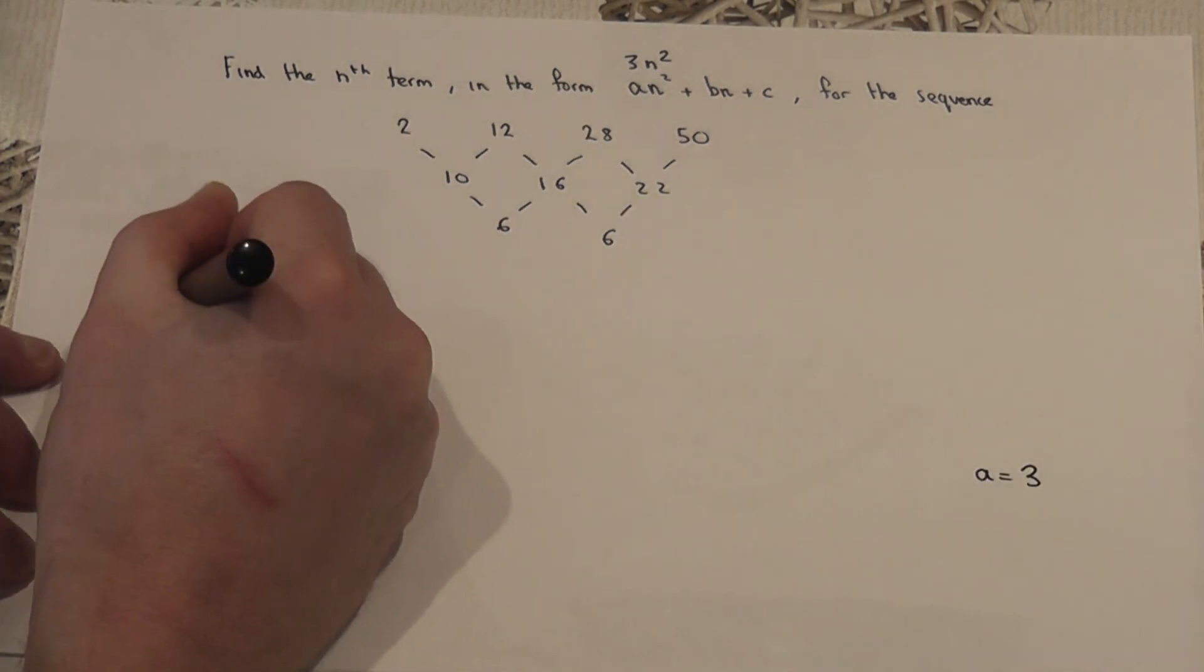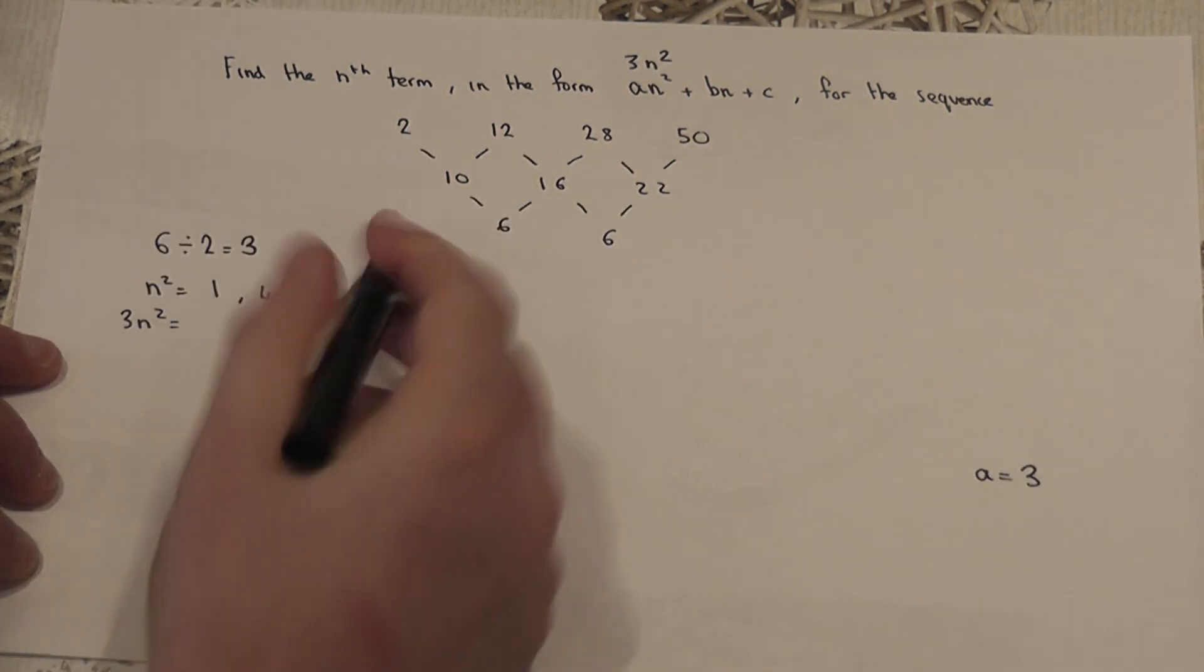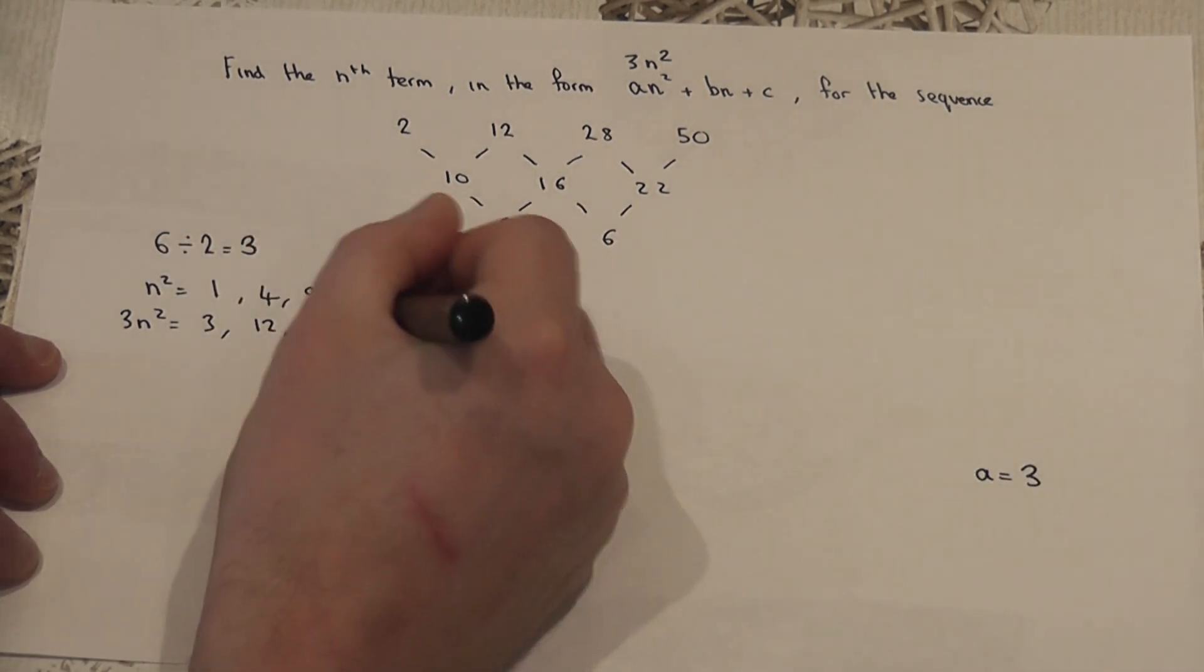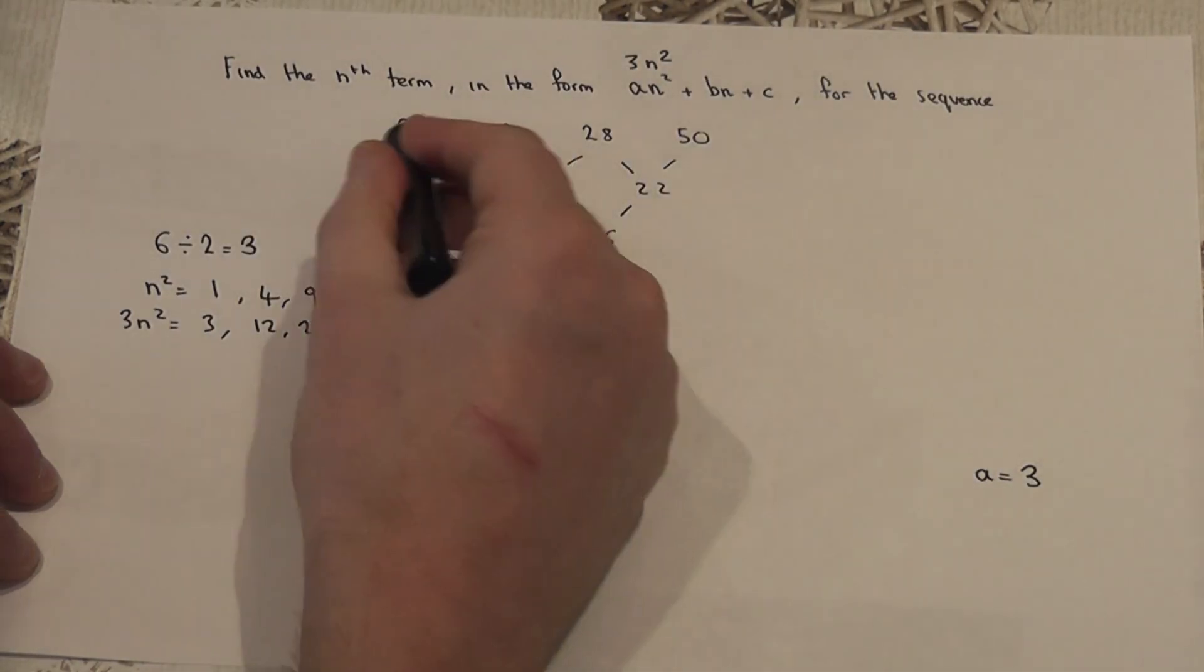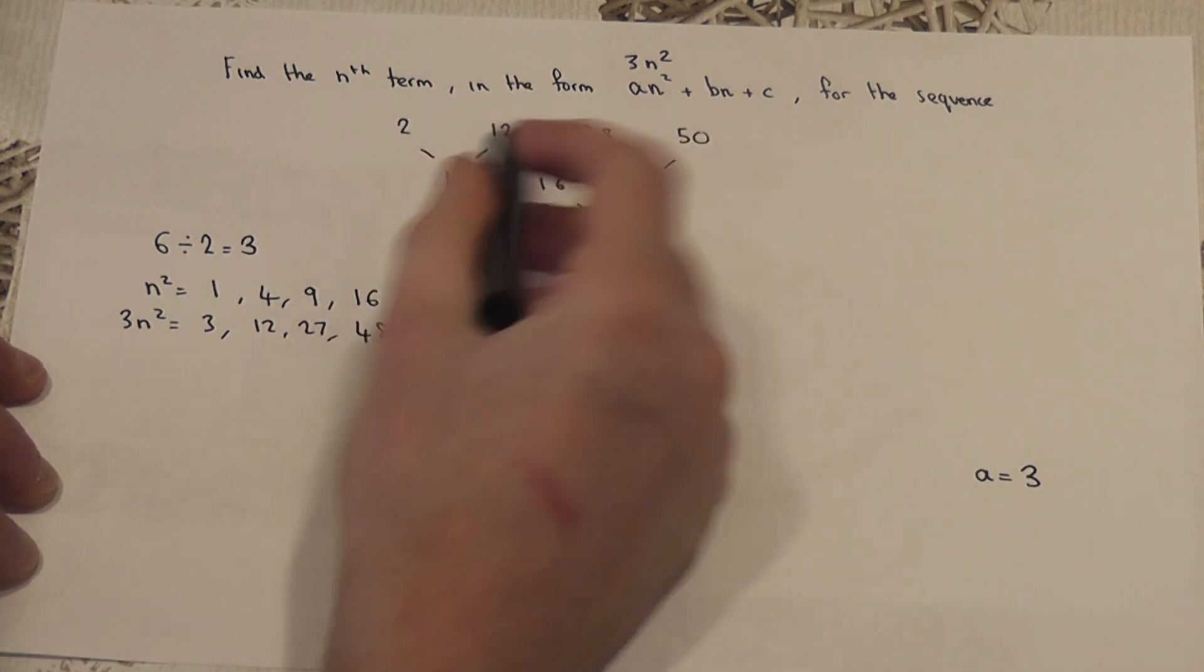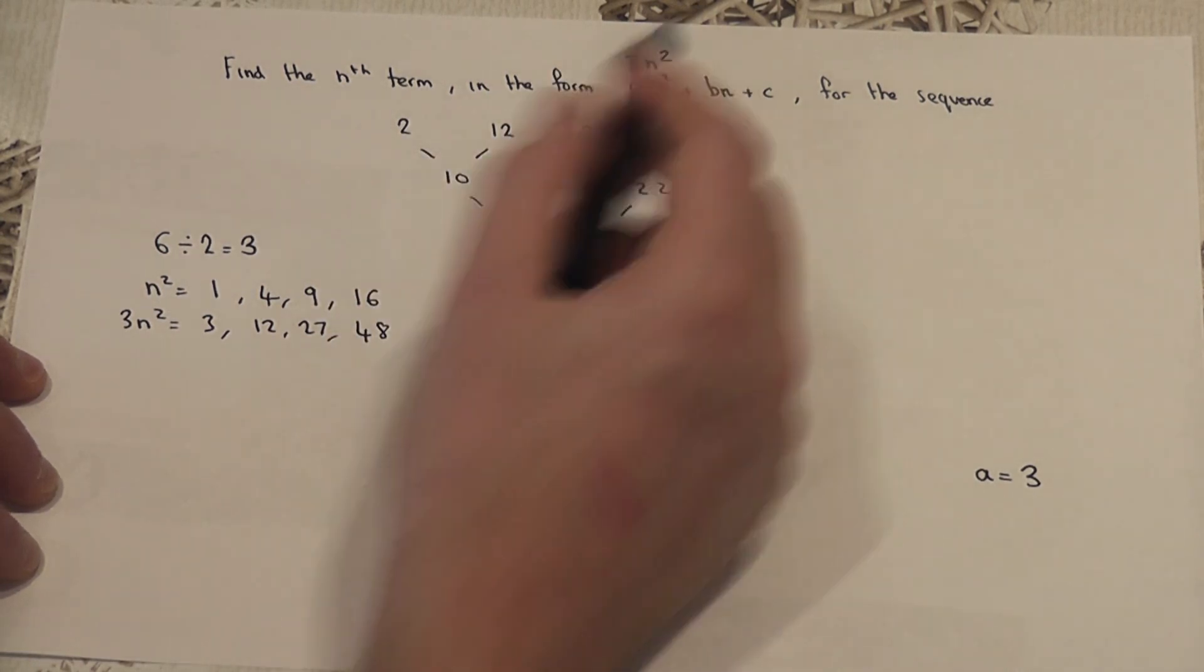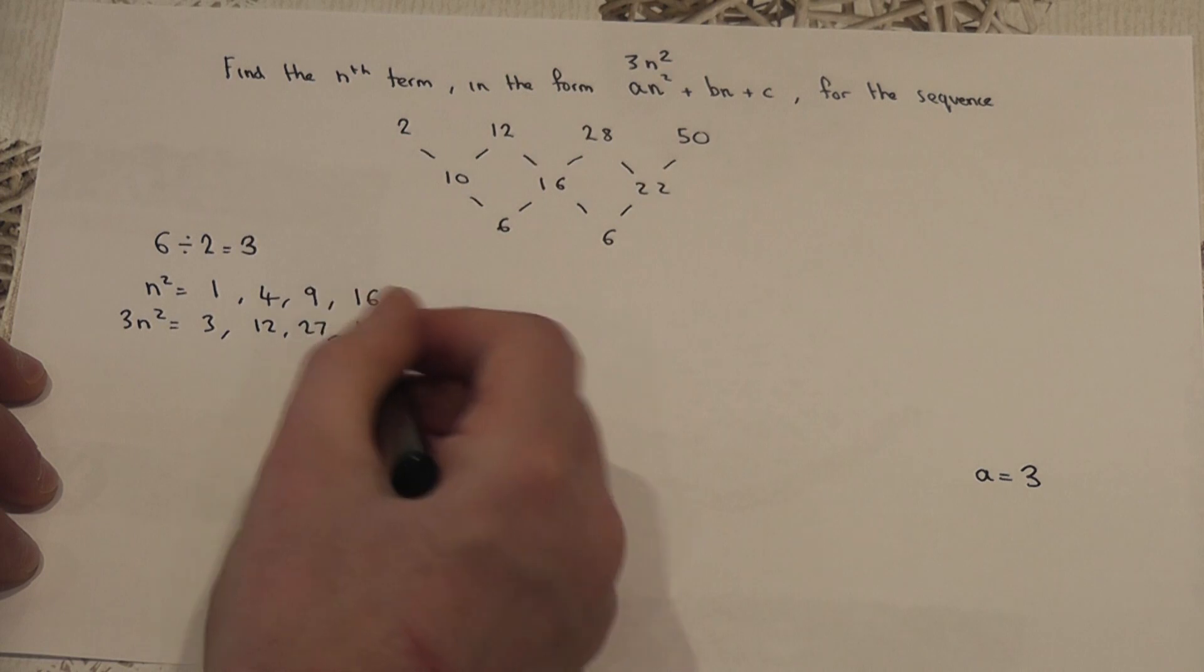So, this means that 3n squared is 3 times 1 is 3, 3 times 4 is 12, 3 nines are 27, and 3 sixteens are 48. So, part of the sequence is 3n squared, given by the numbers 3, 12, 27, 48.